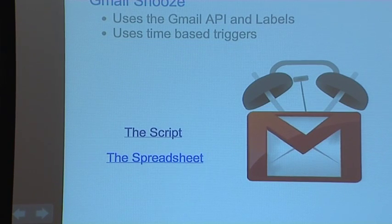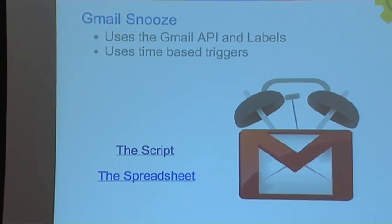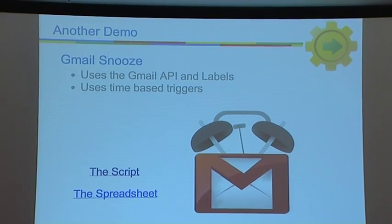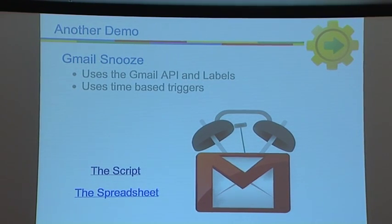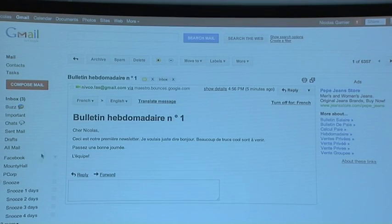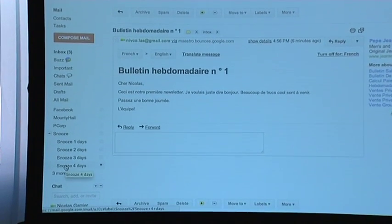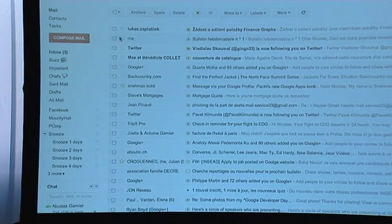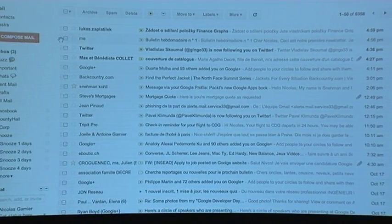One of the latest demos is Gmail Snooze — a really popular blog post. The idea is you get an important email in Gmail but you're busy or on vacation, and you want it to pop up again two or three days later. In Gmail, I've created labels: Snooze One Day, Two Days, Three Days, Four Days. You simply take an email and drop it into one of those folders. Say I want to read that newsletter in two days — I just drop it into the Snooze Two Days folder.